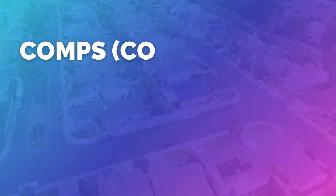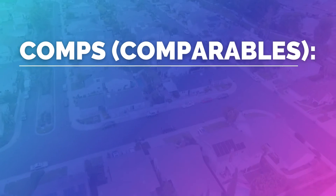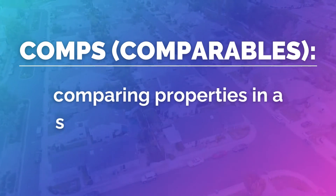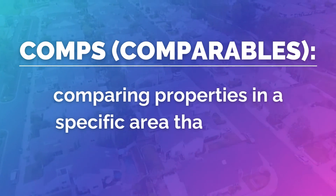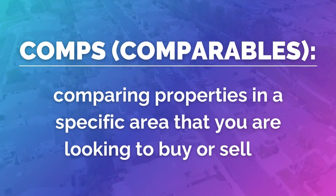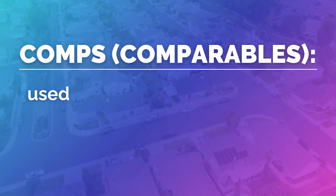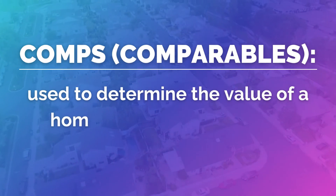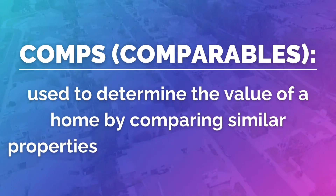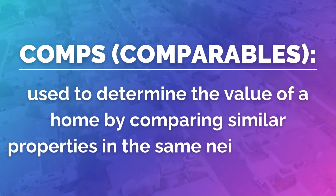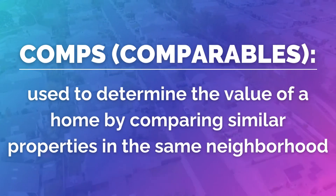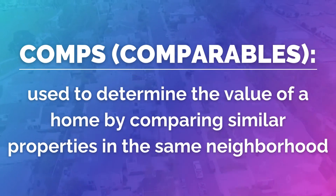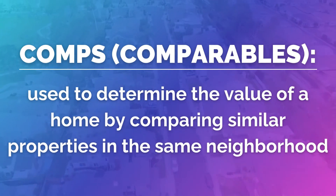Comps is short for comparables — comparing properties in a specific area that you're looking to buy or sell in. They're used to determine the value of a home by comparing it to similar properties sold in the same neighborhood or in an area as close as possible to the house being valued.